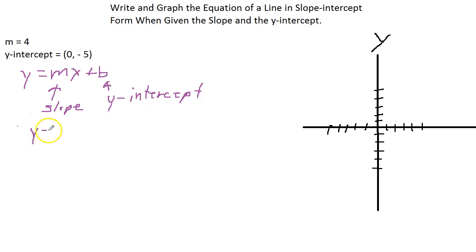So we say y equals 4 times x. Now, we say plus negative 5, which is just minus 5. There's our equation.